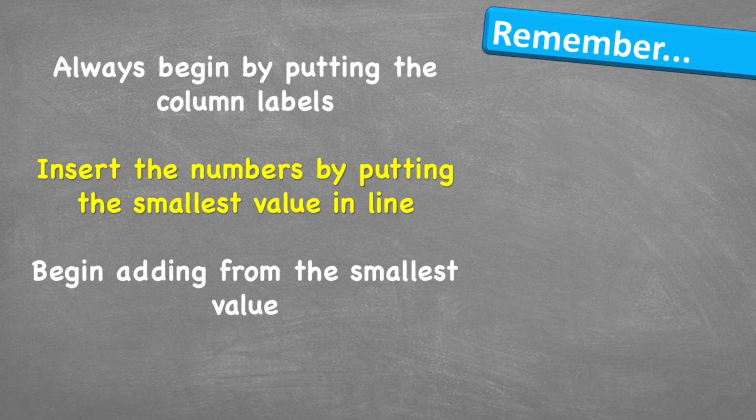Let's look at what to remember. Always begin by putting the column labels. This is going to help you put the numbers in the correct place and not make any small mistakes. Then we're going to insert the numbers by putting the smallest value in line first. And then we're going to begin adding from the smallest value.